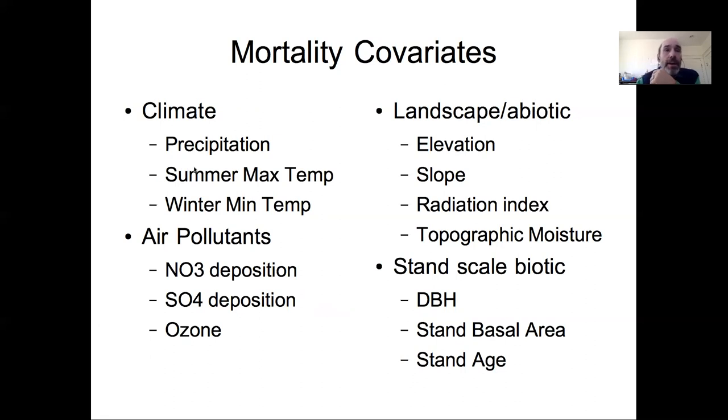We're looking at four different categories of covariates affecting survival: climatic variables such as precipitation, summer maximum temperature and winter minimum temperature; air pollution variables such as NO3 deposition, SO4 deposition and ozone—so this is basically nitrogen deposition, acid rain and ozone; a number of abiotic variables occurring at the landscape scale such as elevation, slope, index of radiation, and a topographic moisture index giving us a measure of hydrological water routing on the landscape; and then a number of stand scale biotic variables such as DBH, the diameter at breast height which is a measure of the size of the tree itself, the basal area within that stand as a measure of how many other trees are in that area and how large those trees are, and then the age of the stand with expectation that survival is going to change as the stand ages.